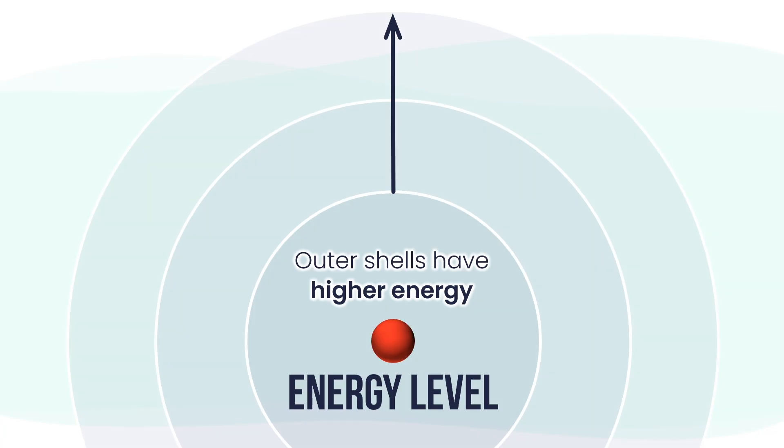These shells are labeled as N equals 1, N equals 2, N equals 3, and so on. Sometimes they are also named as the K shell, L shell, M shell, and so on. In theory, some atoms can have up to 7 shells, ending at the Q shell.